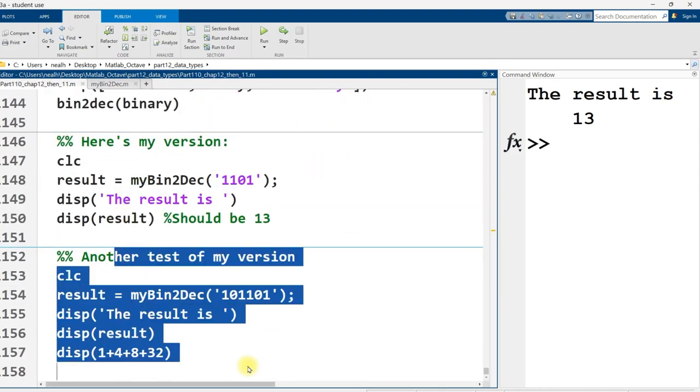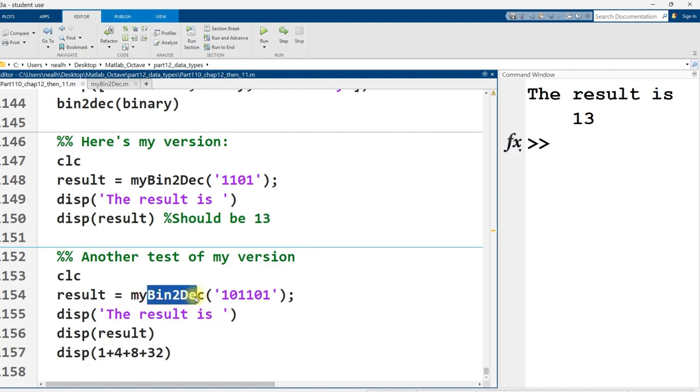And then here's just another test of my version of the binary to decimal converter right here. So this number right here, mine converts it to 45. And that should be correct because it's one plus four plus eight plus 32. One right here plus no twos plus four plus eight plus no sixteens plus 32.